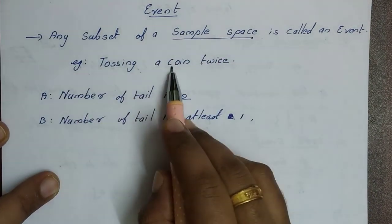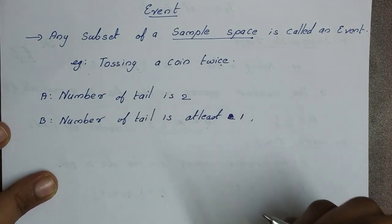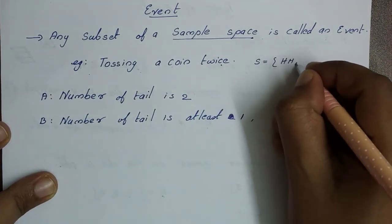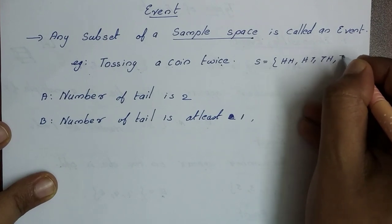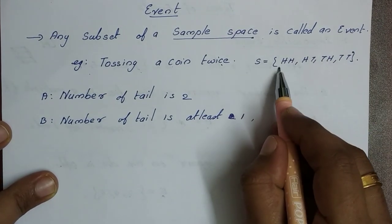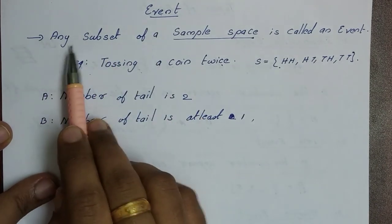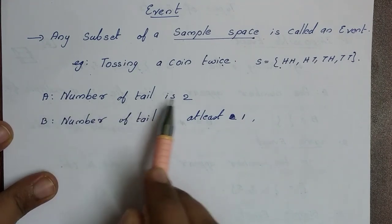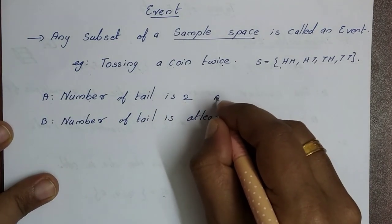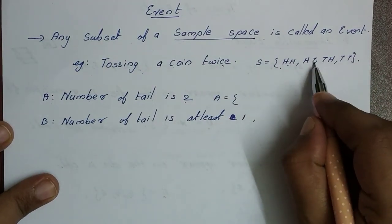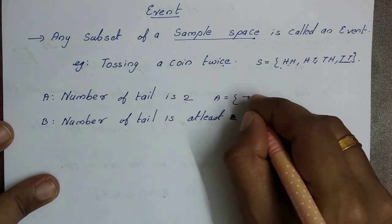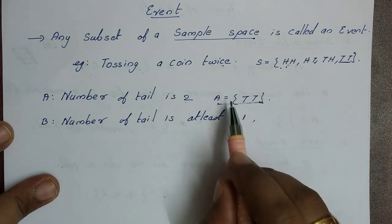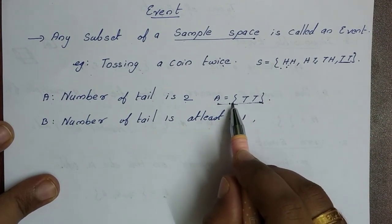Let's take an example: tossing two coins. The sample space is {HH, HT, TH, TT}. We already know the sample space. The event means any subset of a sample space. This sample means event A: number of tails is 2. Here we have two tails — {TT}. This is an event. This is a subset of the sample space, so A is an event.